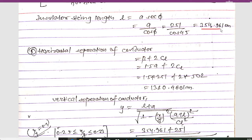For the horizontal separation of conductors, the formula is: horizontal separation = β × A + 2 × CL, where β = 1.5. Substituting: 1.5 × 251 + 2 × 502 = 376.5 + 1004 = 1380.5 centimeters.